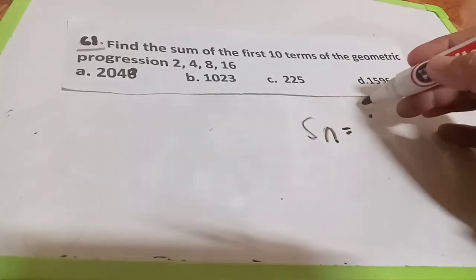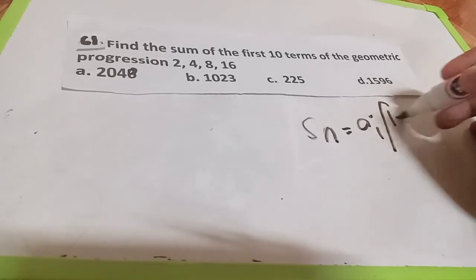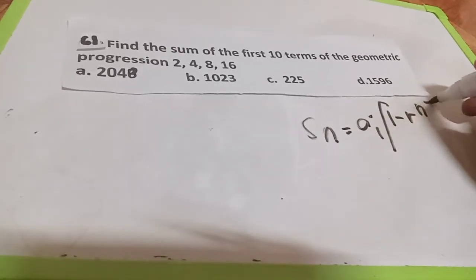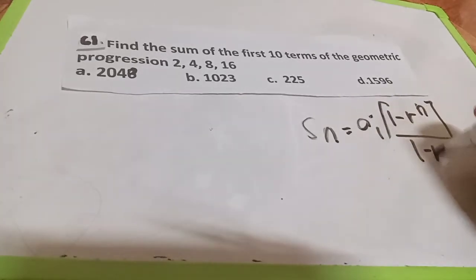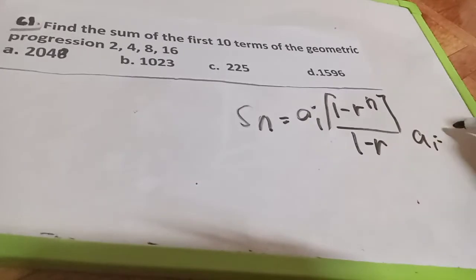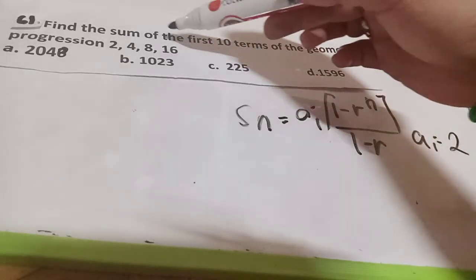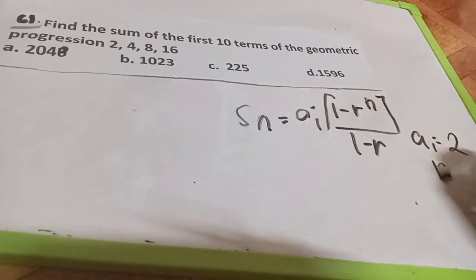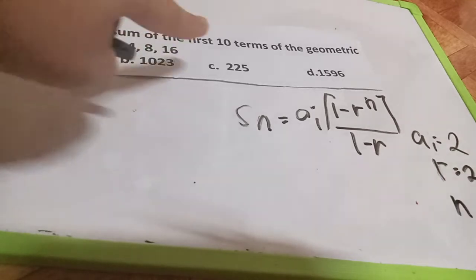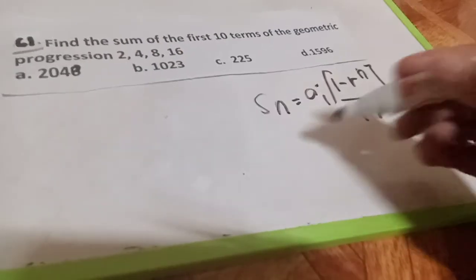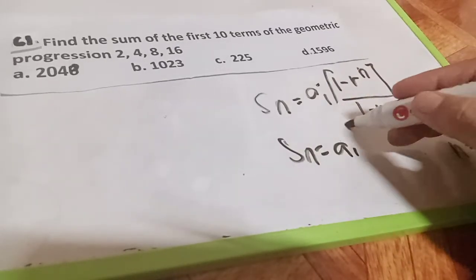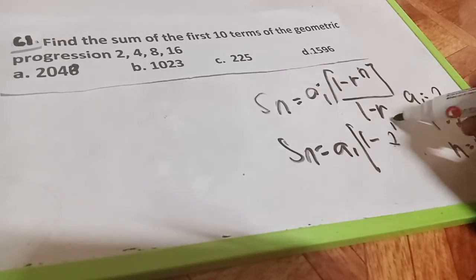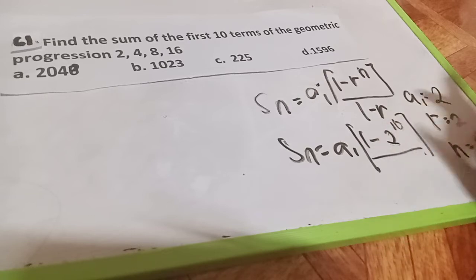When we speak of the sum of a geometric progression, we have S of N equals A1 times (1 minus R to the N) divided by (1 minus R). Suppose A1 is 2. We check: 16 divided by 2 is 8, 8 divided by 2 is 4 — so the ratio R is 2, and N is 10. We substitute into the formula: S of N equals A1 times (1 minus R to the 10) divided by (1 minus R), where R is 2.